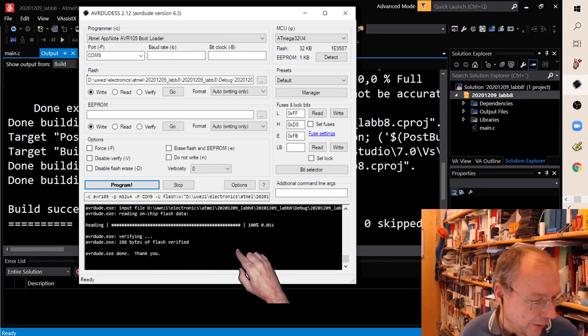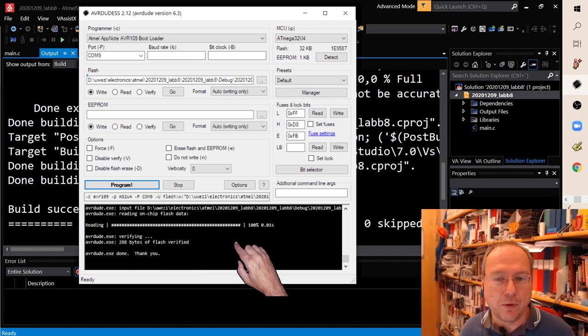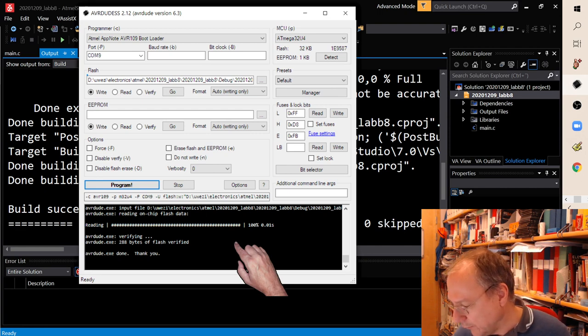Okay, and actually now in idle mode we are down to 8.4 milliamps. It's in idle mode. If I press the button here we see how the current consumption goes up a bit, but that's also because the LEDs are on.